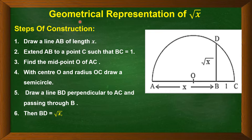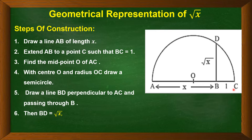Suppose we have to geometrically represent √x. We need to follow these steps of construction. Step one: draw a line AB of length x centimeters. This is our line segment AB equal to x centimeters. Now extend AB to a point C such that BC is equal to 1 centimeter. Since AB equals x and BC equals 1, we can say AC together is x plus 1 centimeters.